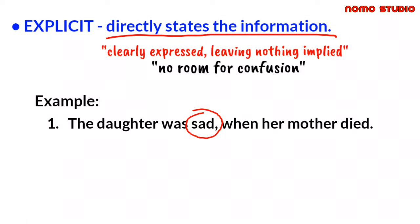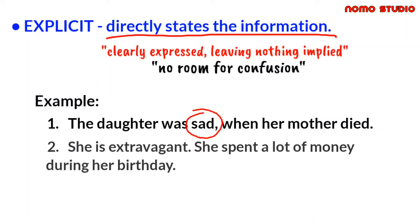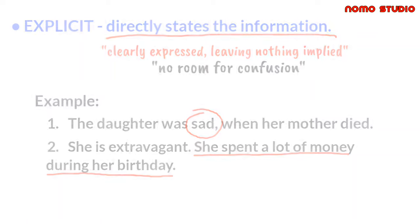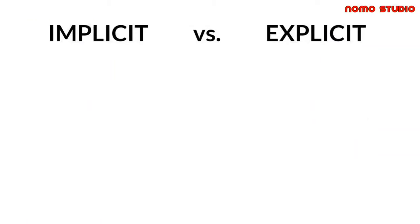Let's take this another example. She is extravagant. She spent a lot of money during her birthday. It explicitly stated that since she spent a lot of money, the subject she is extravagant. So the statement is explicit, since it uses exact words that further explains the whole statement that leaves no question about it.